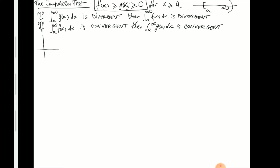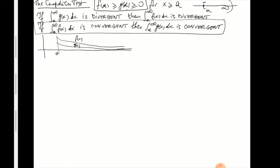We talked about improper integrals in terms of areas of shapes of infinite size. Imagine f(x) is the bigger function and g(x) is the smaller one. The second version of the comparison test — the convergence version — simply states that if the bigger area, which encapsulates the smaller one, is a finite number, then the smaller area corresponding to g(x) must also be a finite number. It cannot go to infinity if it sits beneath a quantity that approaches a finite number.